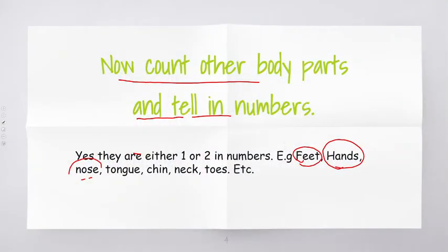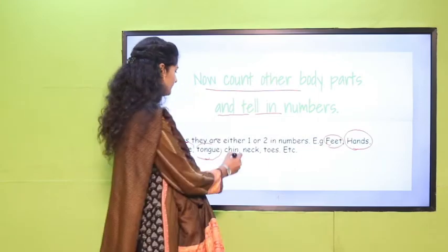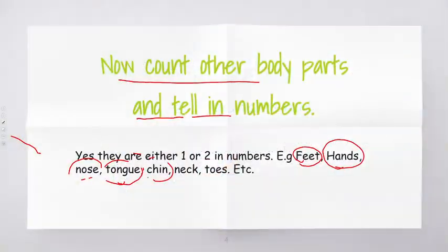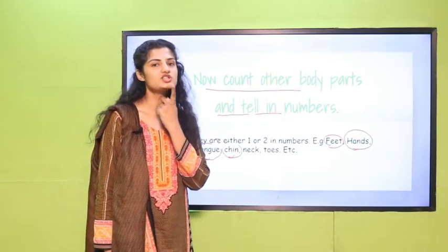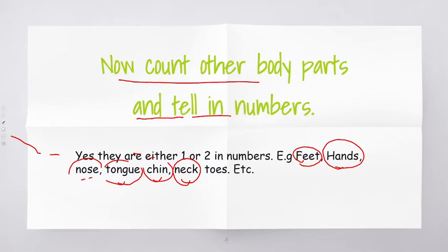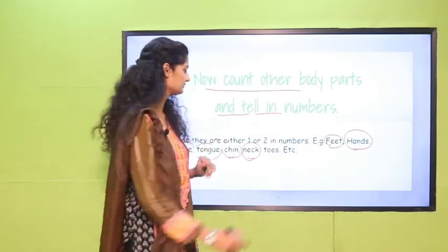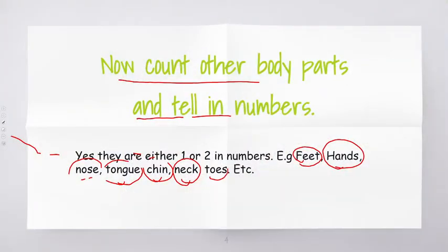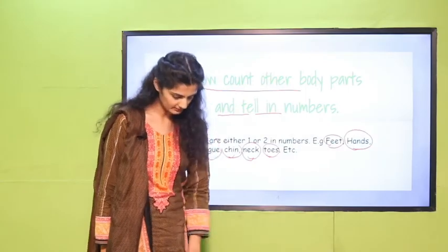How many tongues do you have? Stick out your tongue please. One tongue. Chin — how many chins do you have? One chin. Neck — how many necks do you have? One neck. Toes — how many toes do you have? Two toes. One and two.